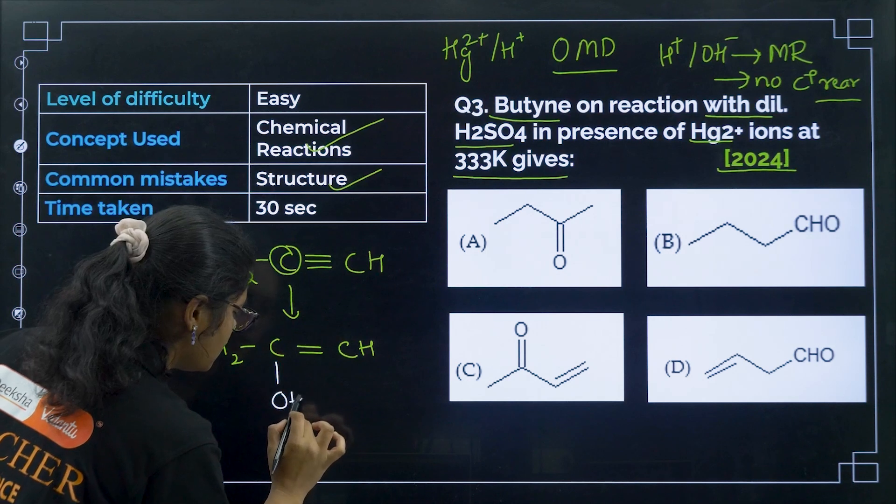Question 19 from 2019: propanoic acid undergoes HVZ reaction to give chloropropanoic acid. The product obtained is? Chlorine is a strong electron-withdrawing group, which increases the acidity of the compound. So the product (chloropropanoic acid) is a stronger acid than propanoic acid. Option number A is the correct answer.